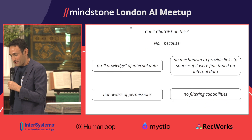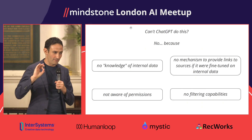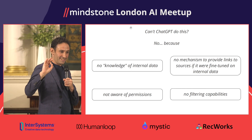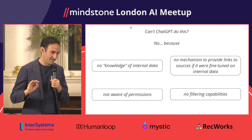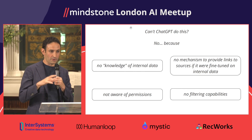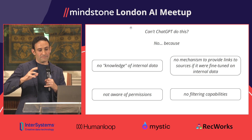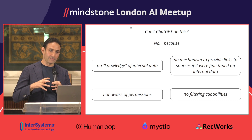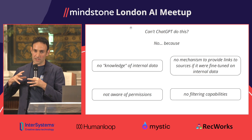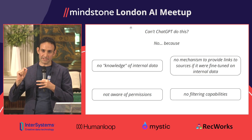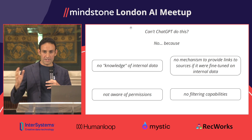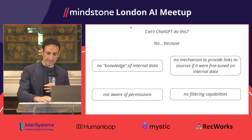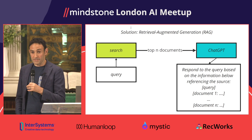A very common question — and if you take one thing out of this talk, it's that ChatGPT by itself is not a solution to this problem. Why not? First, it has no knowledge of internal data. Second, even if it had knowledge through fine-tuning, it is not well equipped to provide links to sources. It has no idea of permissions and doesn't support filtering the way enterprise search systems do.